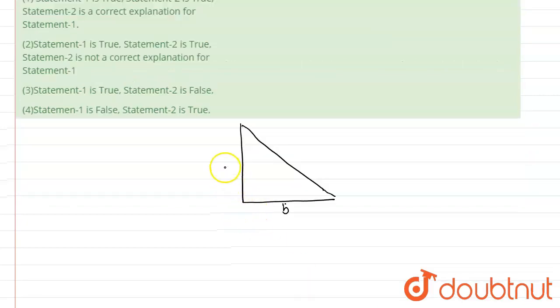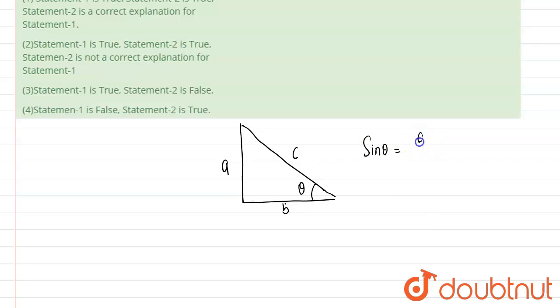Okay, that opposite is a, and that hypotenuse is c. If that angle is theta, so in the triangle, sine theta will be equal to a upon c, and tan theta will be equal to a upon b.